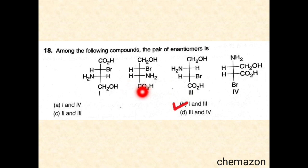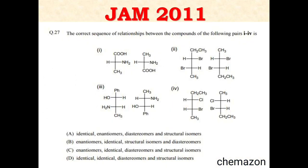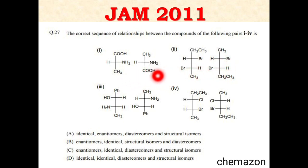Note that in options 2 and 3 the molecule was rotated 180 degrees so that we can make a better comparison. Here is another question from the JAM 2011 paper. Four options are given with pairs of molecules and you have to identify the relationship — whether they are identical, enantiomers, diastereomers, or structural isomers. Let us see the solution.